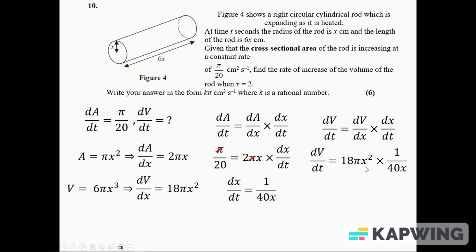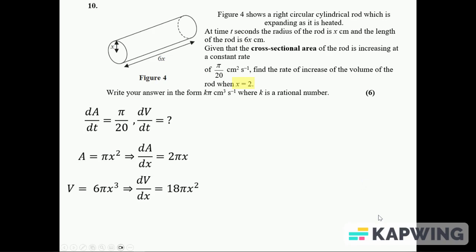Then I'll stick it into here. There's the dV over dx multiplied by the dx over dt which I've just worked out. I can do a bit of simplifying first - x on the top, x squared on the bottom, I'll get one over x. And 18 over 40 is 9 over 20, so it's 9 over 20 times π multiplied by x. It tells us in the question that x equals 2, so stick the 2 in and I'll get nine-tenths of π.